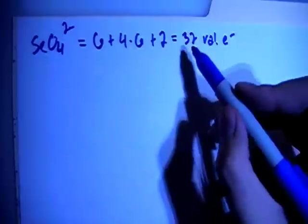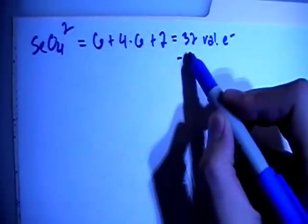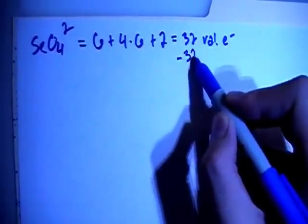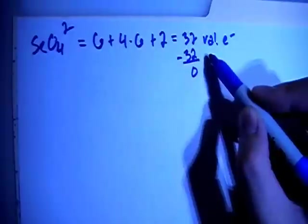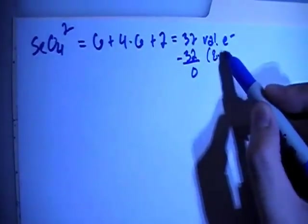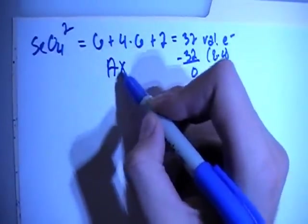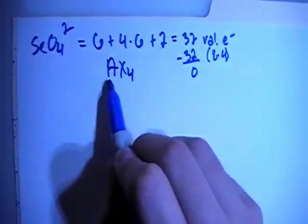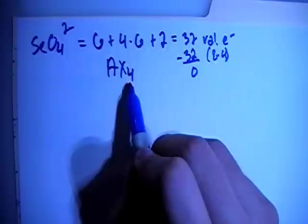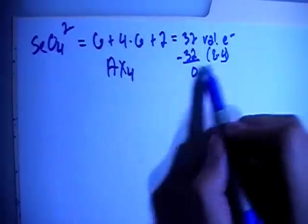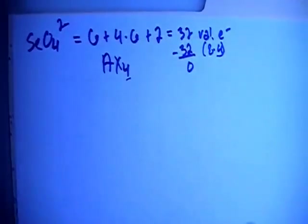So we can go ahead and subtract out from the 32 the largest multiple of 8, which is also 32, giving us 0 remaining electrons. That is 8 times 4, meaning that this is an AX4—one central atom surrounded by 4 peripheral atoms. So let's go ahead and draw this structure.